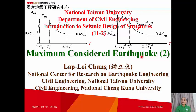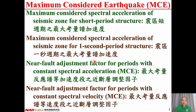Maximum Considered Earthquake 2. Maximum Considered Earthquake corresponds to the earthquake level with 2% probability of exceedance in 50 years, or the earthquake level with a return period of 2,475 years. Here are some terminologies for Maximum Considered Earthquake. The first one is the Maximum Considered Spectral Acceleration of Seismic Zone for Short Period Structure. It depends on the location of the site.